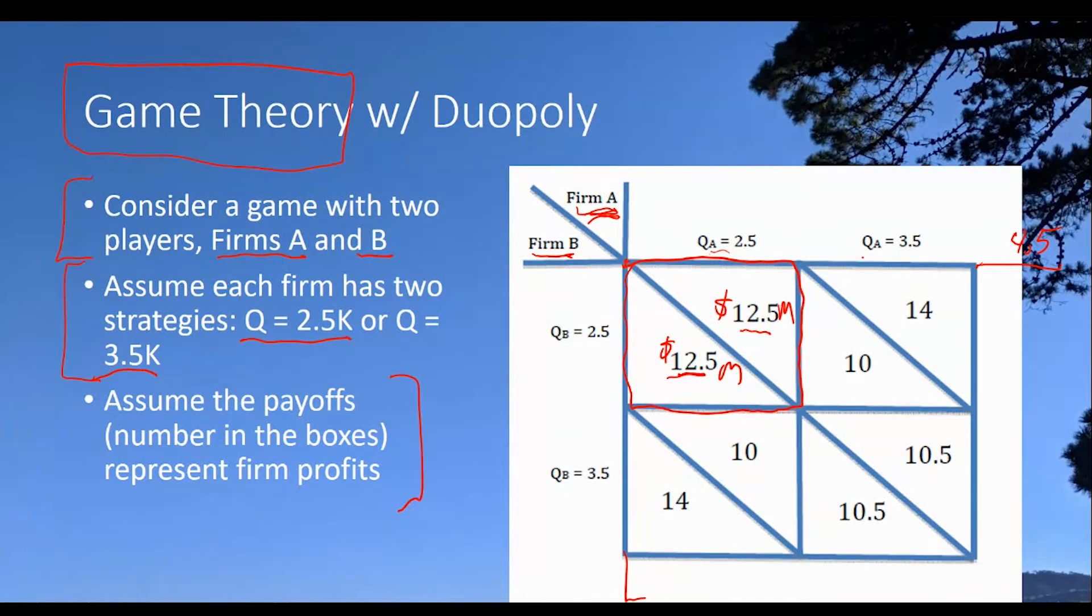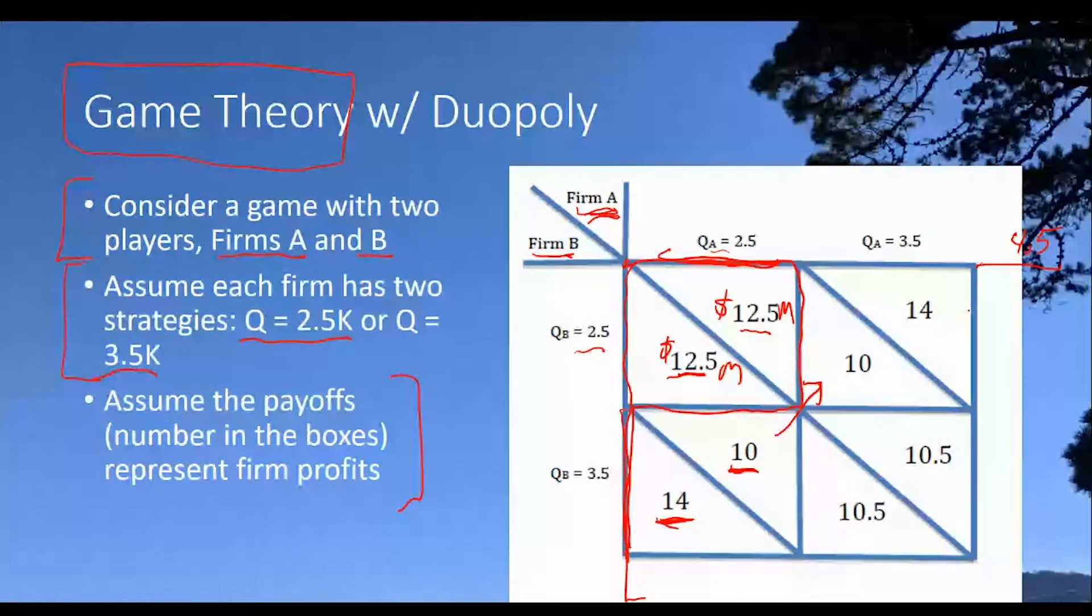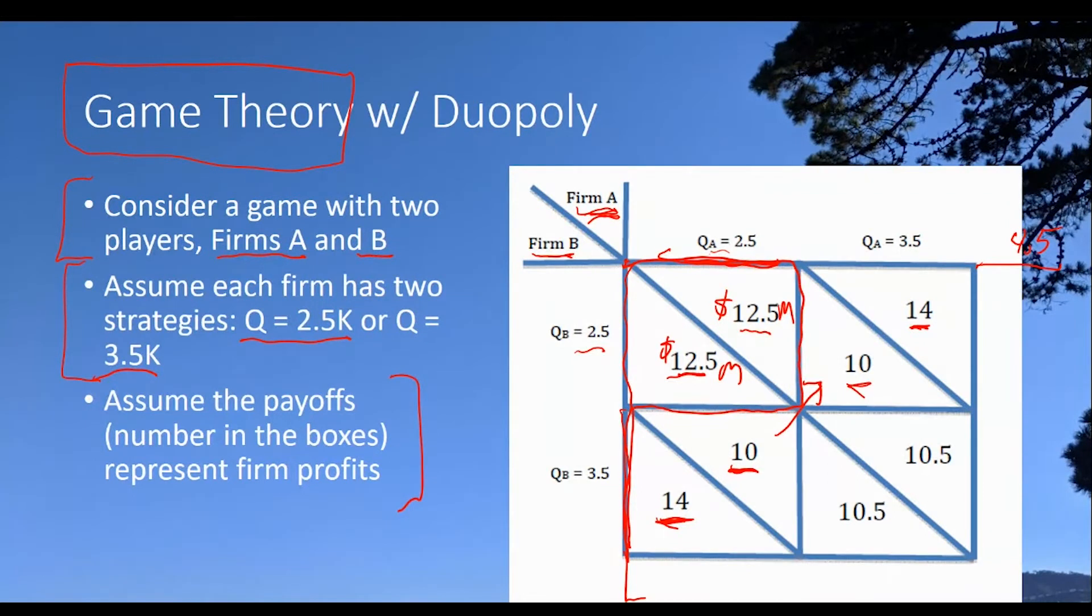Let's do the same thing and figure out the numbers for all the other circumstances. So what we did is imagine that firm B at first increases their output to 3.5, but firm A stayed at 2.5, in which case we end up in this lower left box. We saw that firm B's profits go up to $14 million and firm A's goes down to $10 million. If we reverse it symmetrically, we let A be the cheater at first and B stay fixed, then we're going to get a reversal of the profits. A is going to make $14 million, B is going to make only $10 million. And then lastly, what happens if they both jump to 3.5 thousand diamond production? Then we're going to end up down here on the lower right and profits are going to drop to $10.5 million each.